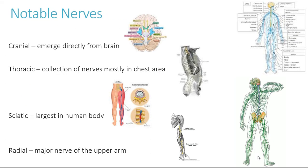Looking at the PNS first, some of those notable nerves that you will need to know are the cranial nerve, which emerges directly from the brain, the thoracic, which is a collection of nerves mostly in the chest region. You also have the sciatic nerve, which is the largest one in the human body that runs the length of the lower limb, and also the radial nerve, which is the major nerve of the upper limb supplying the arm.